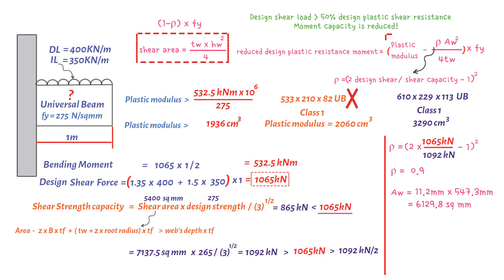We input our values in this equation, we get the reduced design plastic resistance moment 671 kilonewton meter, which should be equal or less than the moment capacity, which equals plastic modulus 3290 times 10 to the power of 3 times 265 divided by 10 to the power of 6, giving us 871.9 kilonewton meter.